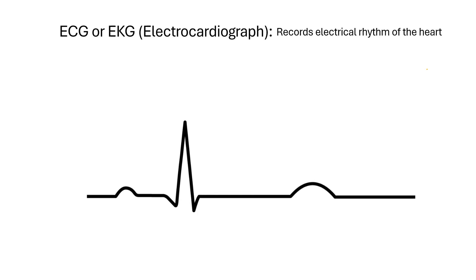An ECG, also called an EKG, is a graph that records the electrical current as it passes through your heart. Before we can get into what these waves actually mean, we need to review some basic terminology.